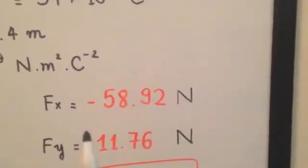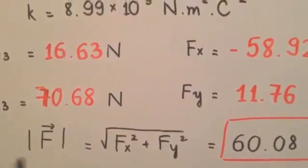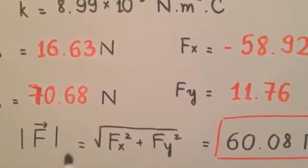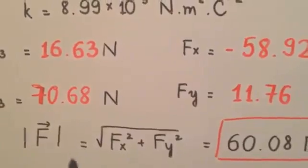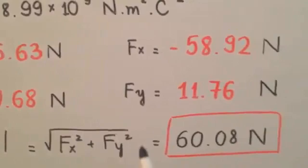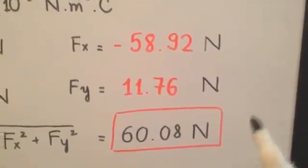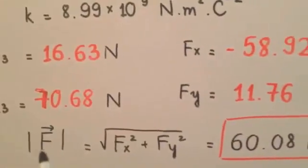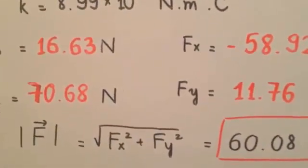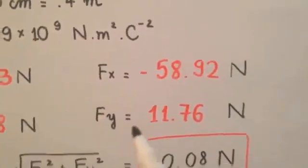We get the magnitude of F13, F23, and then find out the components Fx and Fy, the unit in Newtons, of course. And then, finally, we can find the magnitude of the net electrostatic force exerted on Q3, equals square root of Fx squared plus Fy squared equals 60.08 Newtons. This is the final result for the magnitude of F. If they're asking you about what is the component of F, you already get Fx and Fy here.